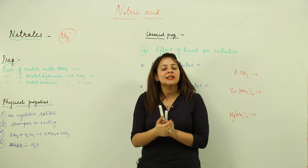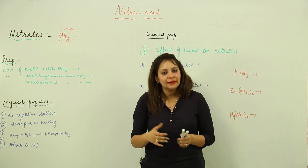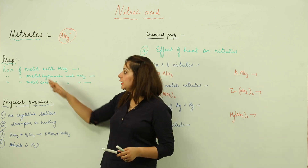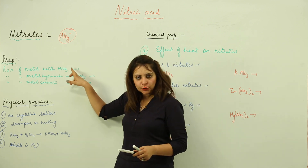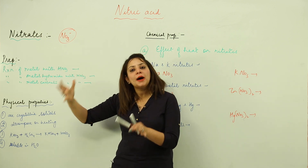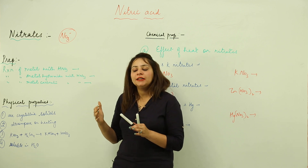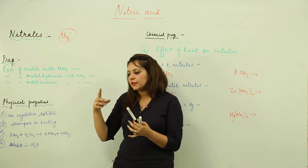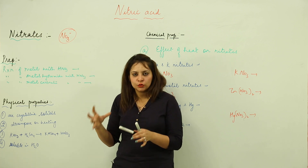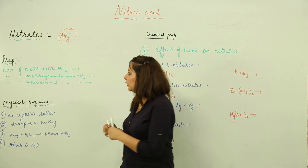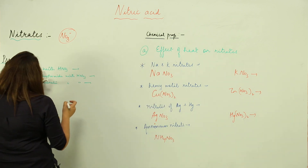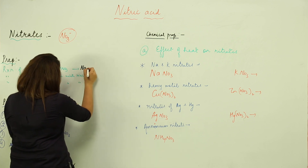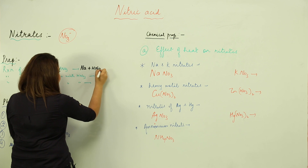Our first concern is how we prepare nitrates. We can prepare nitrates by reacting a metal or any metal compound — such as metal hydroxide or metal carbonate — with HNO3. For example, I have a reaction of sodium metal with HNO3.